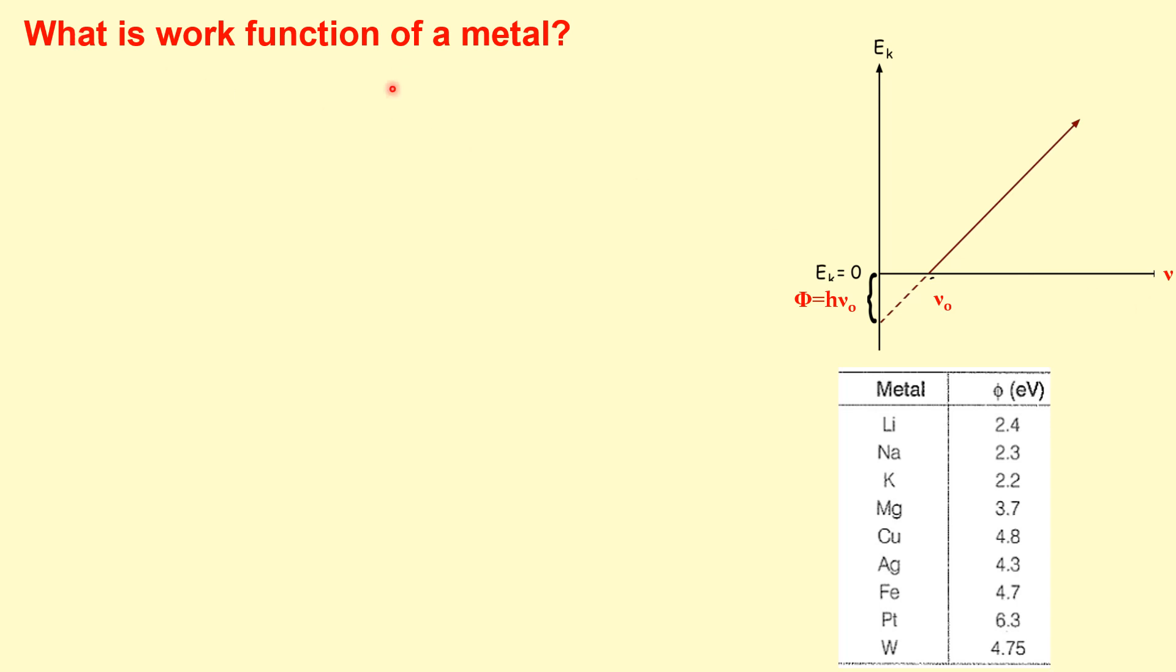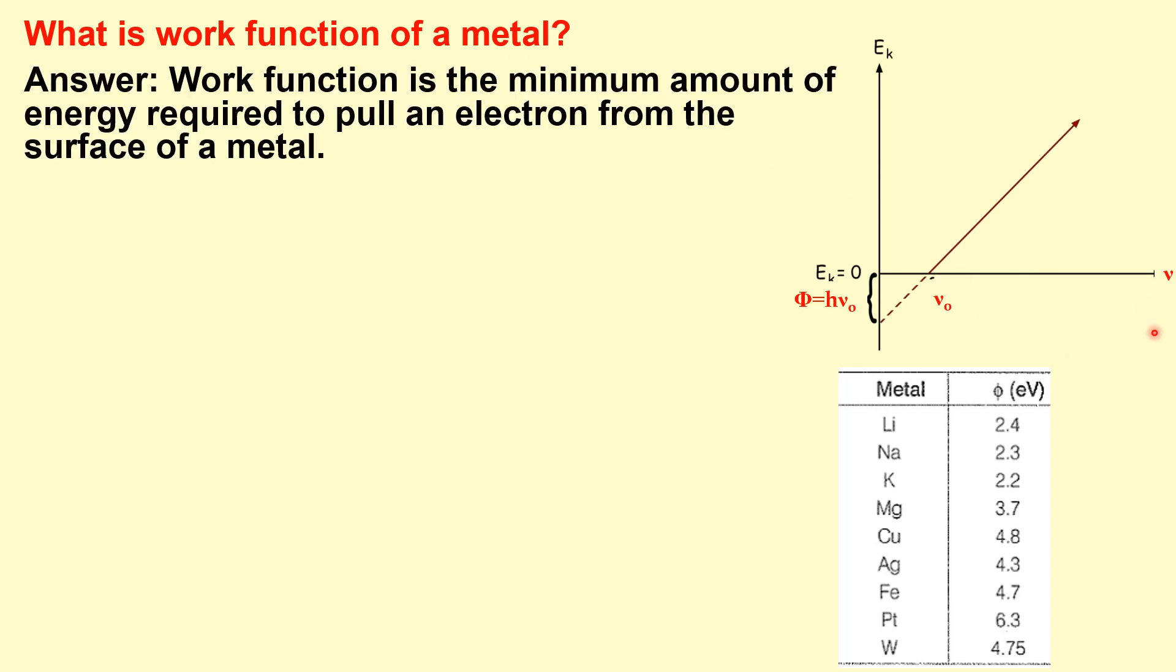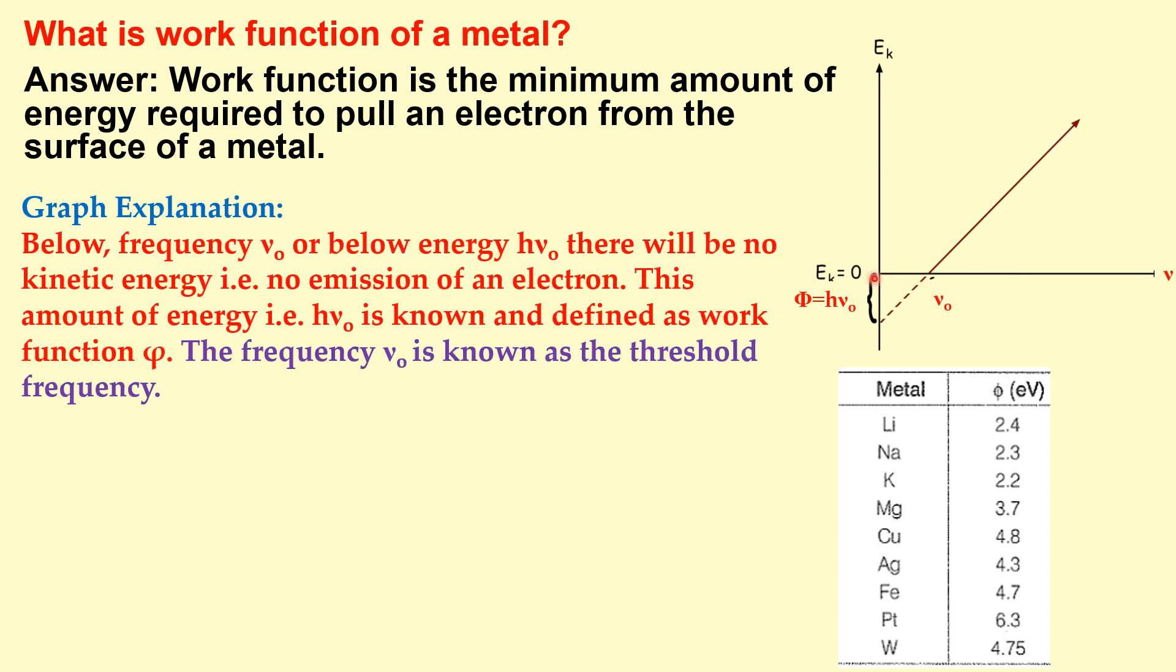What is the work function of a metal? Work function is the minimum amount of energy required to eject an electron from the surface of a metal. Using this graph, nu frequency versus the kinetic energy of electron, we can see that there is no photoelectrons up to certain frequency nu naught. Below the frequency nu naught or below this energy H nu naught, there will be no kinetic energy of electrons, Ek equals zero. This amount of energy phi equals H nu naught is known as the work function phi of that metal, and nu naught, the frequency, is known as the threshold frequency.